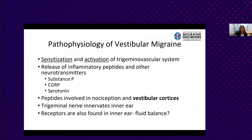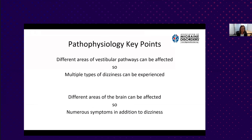These peptides also activate the vestibular cortices. Interestingly, the trigeminal nerve also innervates the inner ear, which is why we might get some peripheral symptoms in migraine—hearing loss and loss of balance function on occasion. CGRP receptors and others are found in the inner ear and may have to do with fluid balance. This may explain the connection between Meniere's disease and migraine, though this is not fully understood.